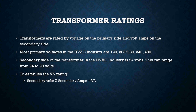The secondary side in the HVAC industry is most commonly 24 volts. When you take a voltage reading on a 24-volt transformer, it can range — this is perfectly normal. You're usually looking for a range anywhere between 24 and 28 volts. From my field experience, if you're not getting close to 24 volts, that can be a telltale sign that the secondary side of the transformer is starting to break down and will eventually fail.